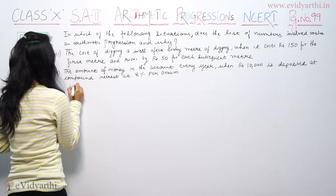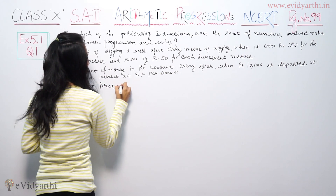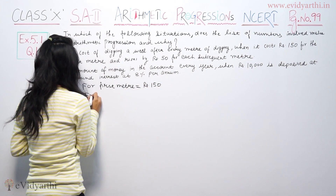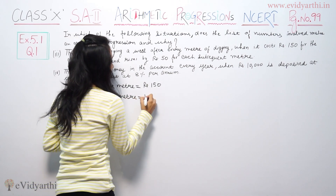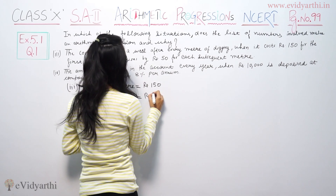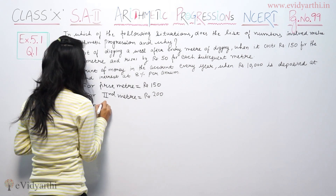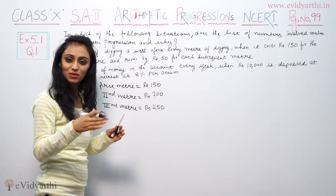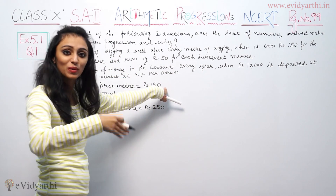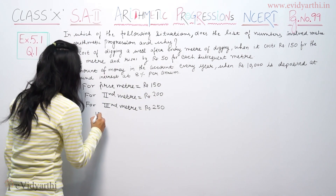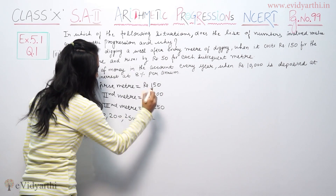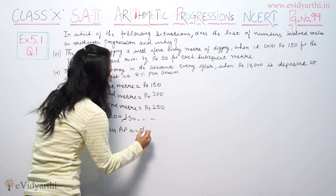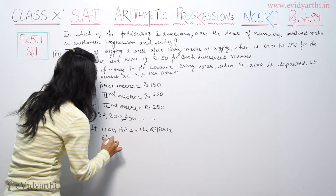So the costs are: for the first meter, rupees 150; for the second meter, rupees 200; for the third meter, rupees 250; and so on. Because 150 was the first meter cost, it increases by 50 rupees each time — 150, then 200, then 250. It is an AP, as the difference between every two consecutive terms is the same.